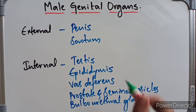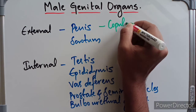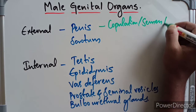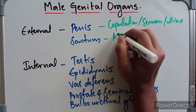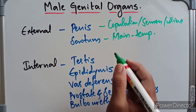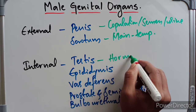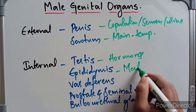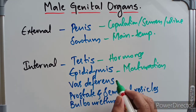The function of the penis is to help in copulation and in the passage of semen or urine. The scrotum maintains the temperature for the development of the spermatozoa. The testis produces the testicular hormones, and the epididymis helps in the maturation of the sperms.